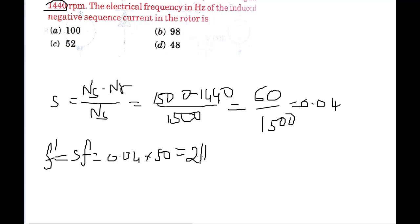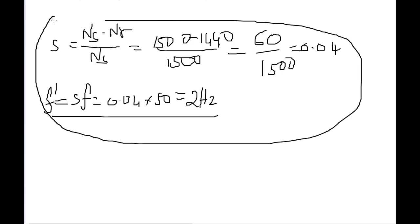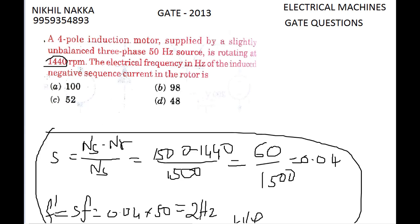Equals 2 Hertz. So this is the general method which we go by finding the frequency of the induced current. But there is no 2 in the options because this method which we are using to find the slip frequency in the rotor is for positive sequence currents. This formula and procedure corresponds to positive sequence, whereas...